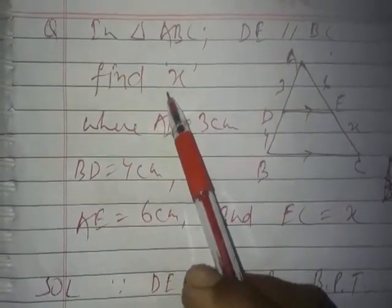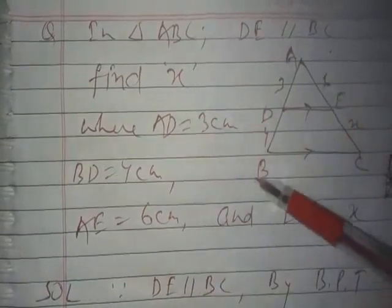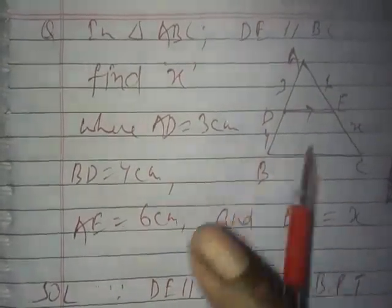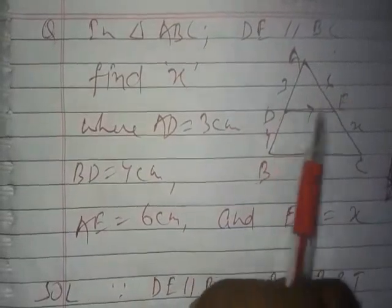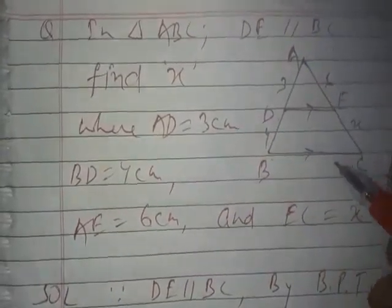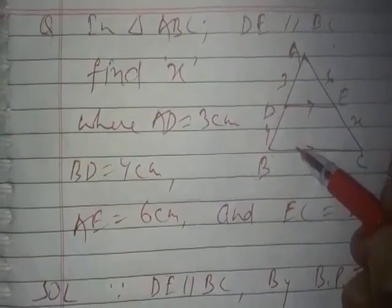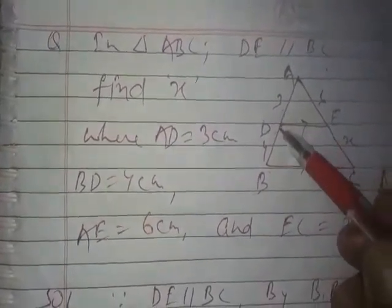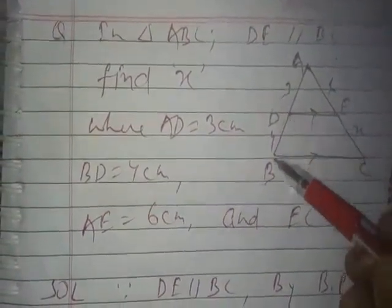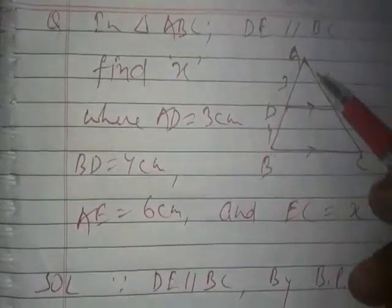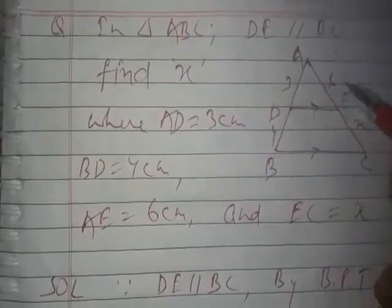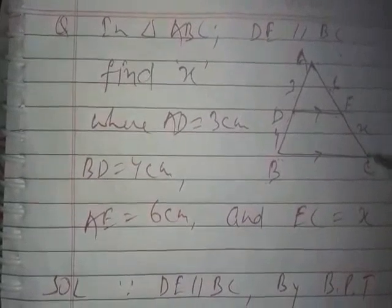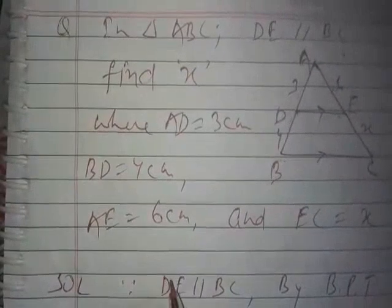Suppose there is a triangle ABC in which DE is parallel to BC. The value of AD is given as 3 cm, DB is given as 4 cm, AE is given as 6 cm, and we have to find out the value of EC. We can solve it using the basic proportionality theorem.